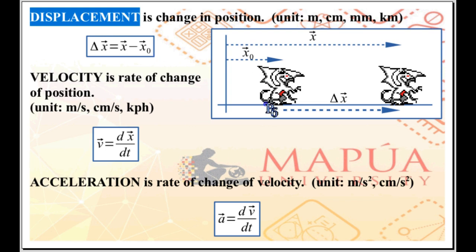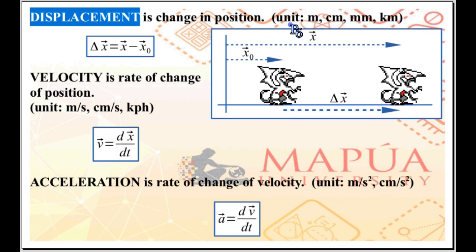Since position is measured in terms of length, displacement is also measured in terms of length. The unit of displacement is a unit of length: meters, centimeters, millimeters, kilometers, and so on.